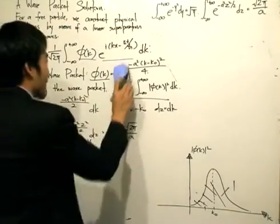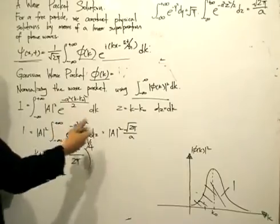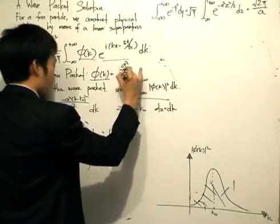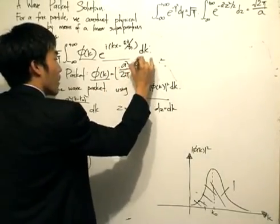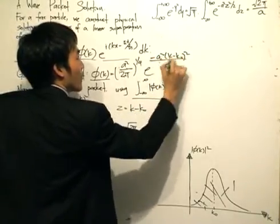So our Gaussian wave packet now becomes, basically, you put in this normalizing constant, which is a² divided by 2π, and you take that to the power of a quarter, times e to the minus a²(k - k₀)² divided by 4.